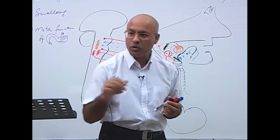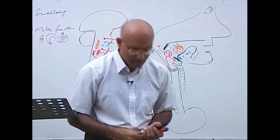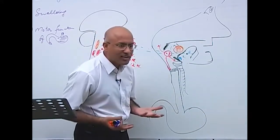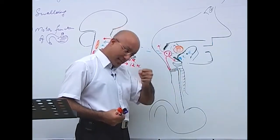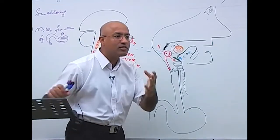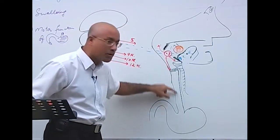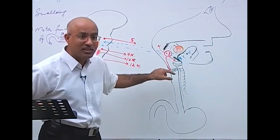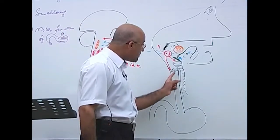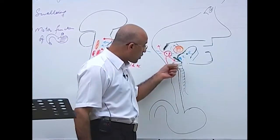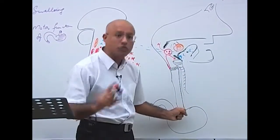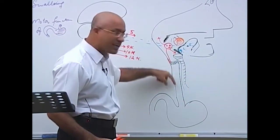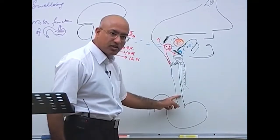The upper esophageal sphincter is normally closed to prevent air from inappropriately entering the GI system, and the lower esophageal sphincter is also normally closed between swallows to prevent reflux from the stomach. When the larynx moves upward and anteriorly during swallowing, the upper esophageal sphincter opens. This is because the upper esophageal sphincter is the cricopharyngeus muscle — the lowermost part of the inferior pharyngeal constrictor, attached to the cricoid bone.